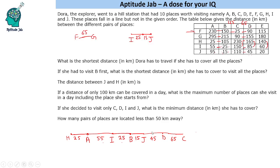So we have now placed 7 places: H, A, I, B, J, D, C. Three more places to place — E, F, and G. We know F and G are 65 kilometers apart, but we need to link them with others.